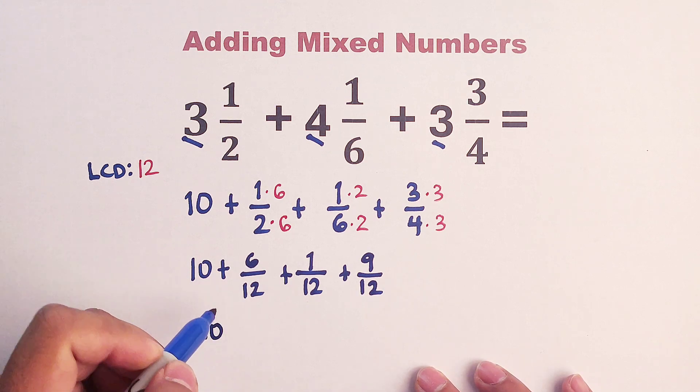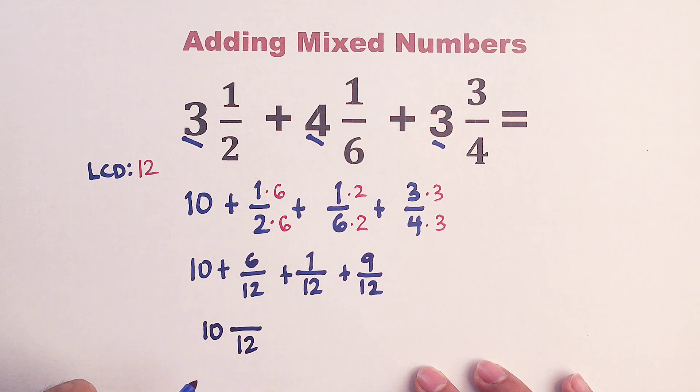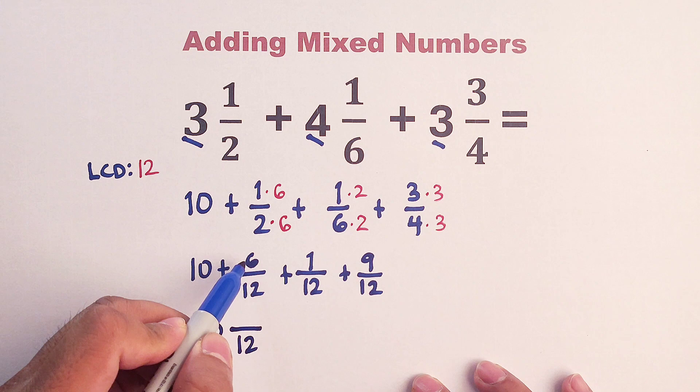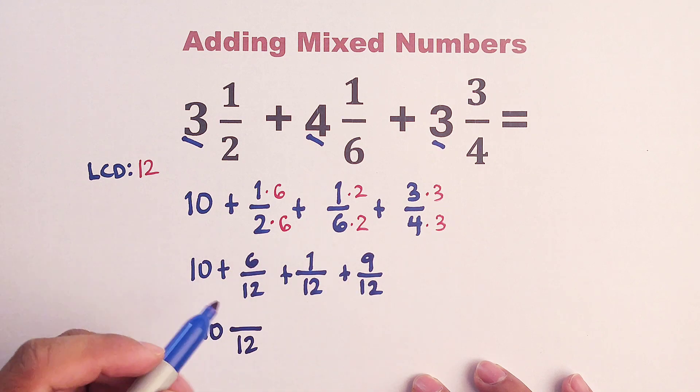We have here 10. And as for the fractions, we will copy the denominator, which is 12. Add the numerator, six plus one plus nine. That would be 16.